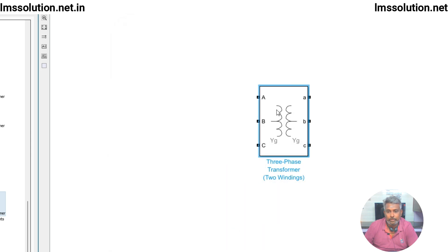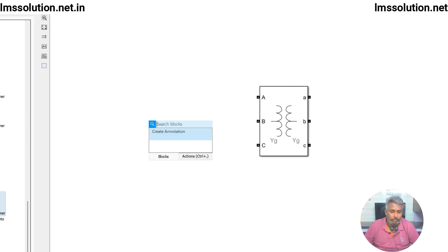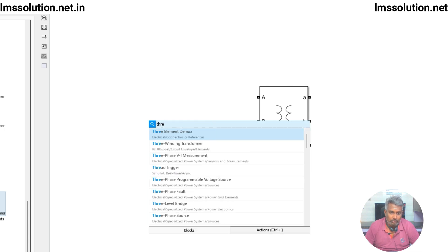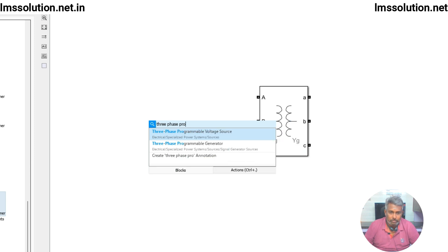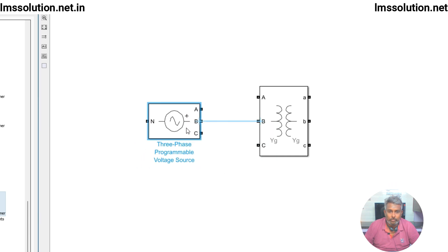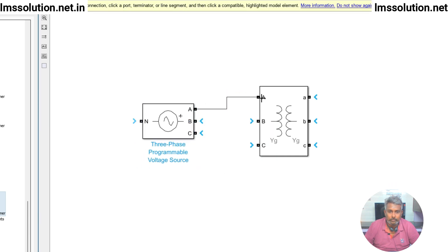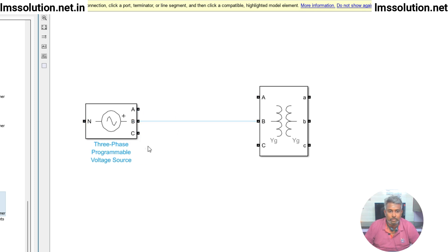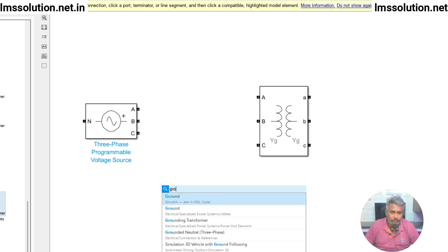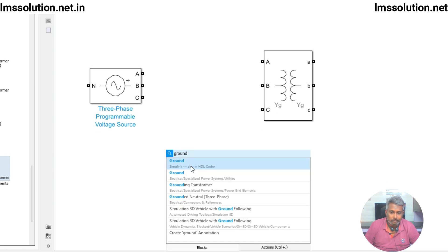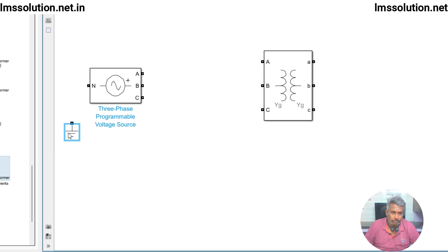Next we need to provide input. I am going to use a three-phase programmable voltage source and connect it to the transformer. Before connecting, I am going to add a ground to connect the source neutral. We also need to measure the primary side voltage and current and the secondary side voltage and current.